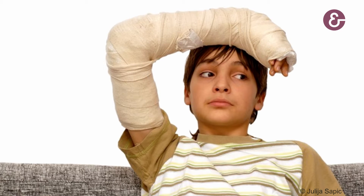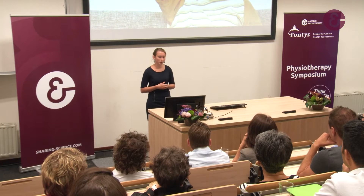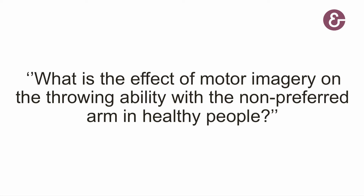Motor imagery is already used in neurorehabilitation and in top sports. But it could be a great way to train during an immobilization, because patients can train while they are immobilized without being physically active. Research shows that you can train range of motion and strength during an immobilization with motor imagery. But maybe you can also train a difficult skill, such as throwing, during the immobilization of the wrist. Based on that assumption, I formulated my research question: what is the effect of motor imagery on the throwing ability with the non-preferred arm in healthy people?